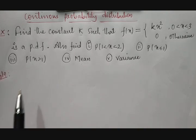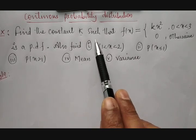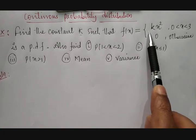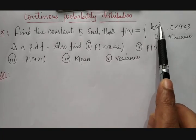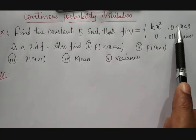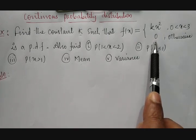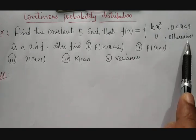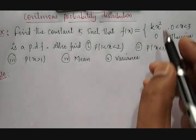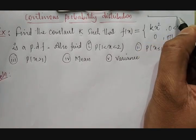The problem says: find the constant k such that f(x) = kx², where x lies between 0 to 3, and 0 otherwise. Let us understand what 'otherwise' means first.